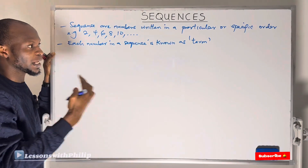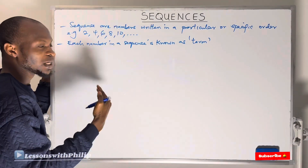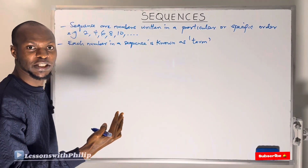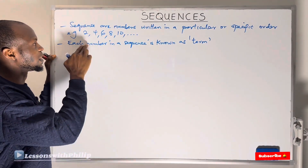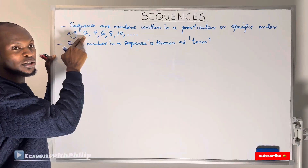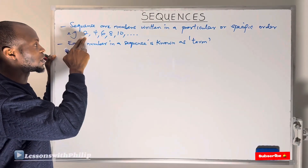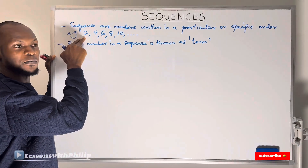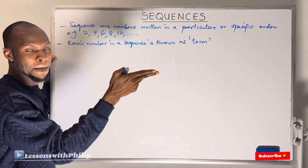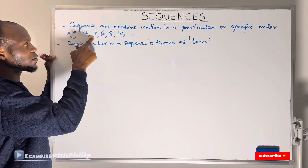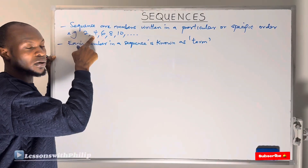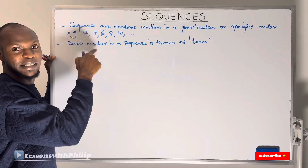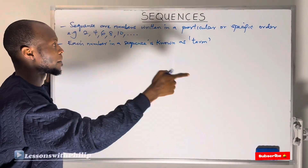So 2 is a term, 4 is a term, 6 is a term, 8 is a term, 10 is a term. Because 2 comes first, it is known as the first term. Because 4 came second, it is known as the second term.